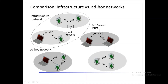In the ad-hoc network, the complexity of each node is higher because every node has to implement a medium access mechanism, a mechanism to handle hidden or exposed terminal problems, and perhaps priority mechanisms to provide a certain quality of service.